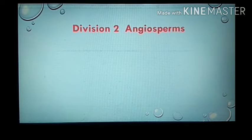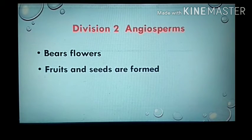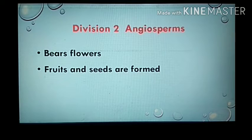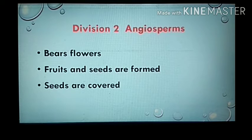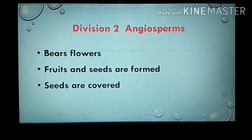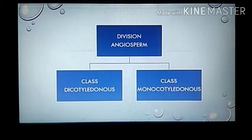The second division is angiosperms. The main character is that these are flowering plants — they bear flowers as a reproductive organ. Fruits and seeds are formed through reproduction. The seeds are covered and enclosed within the ovary. 'Angios' means hidden and 'sperma' means seeds — the seeds are hidden and covered by the ovary.